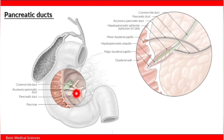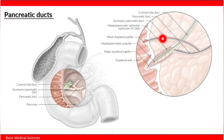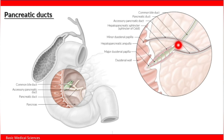In this zoomed view, the main pancreatic duct and the accessory pancreatic duct are visible. Following the accessory duct, it empties on the minor duodenal papilla. The major pancreatic duct combines with the bile duct to form the hepatopancreatic duct, controlled by the hepatopancreatic sphincter or sphincter of Oddi.